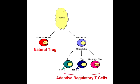You can also think of these cells as cells that will shut down the immune system after they have eliminated a pathogen, so this will prevent autoimmunity.